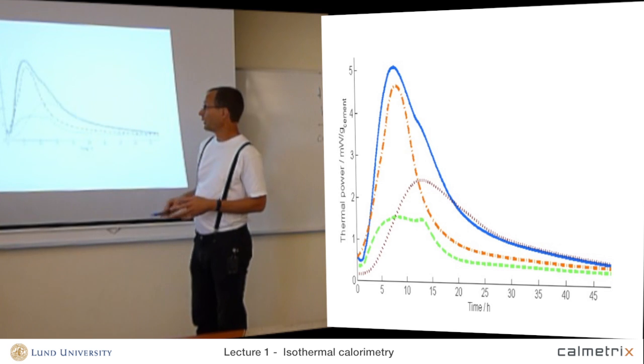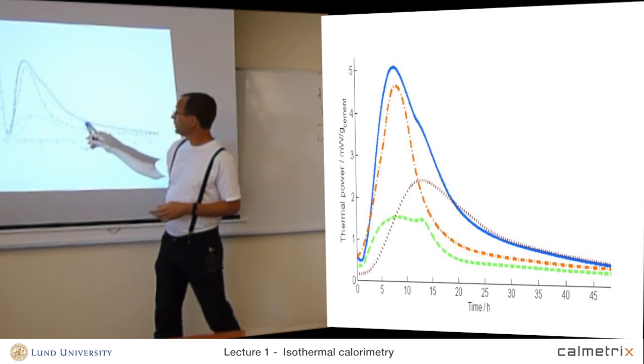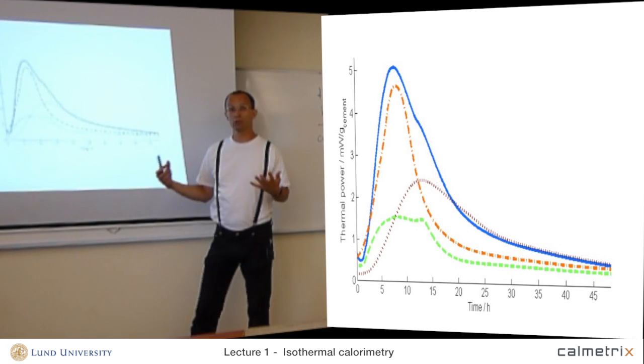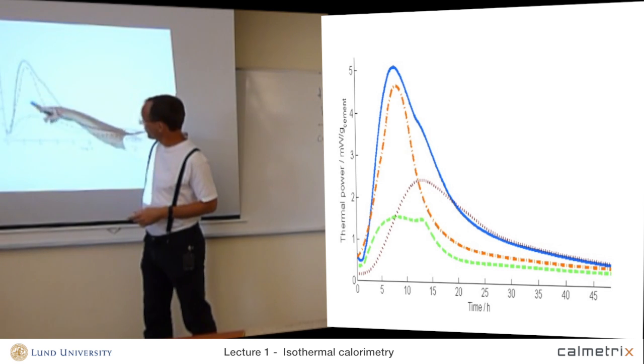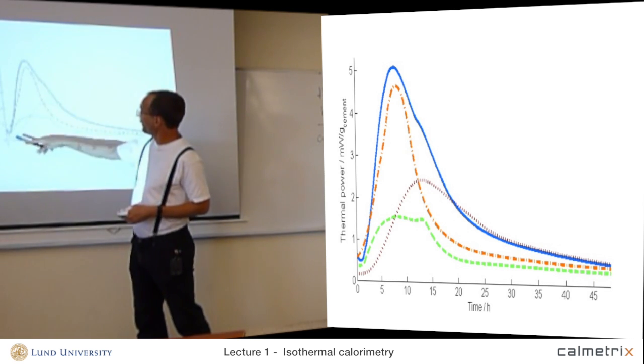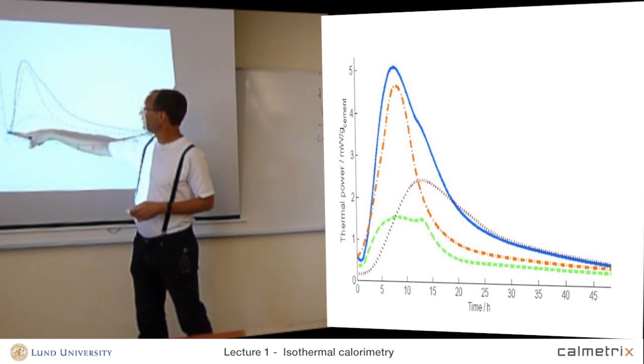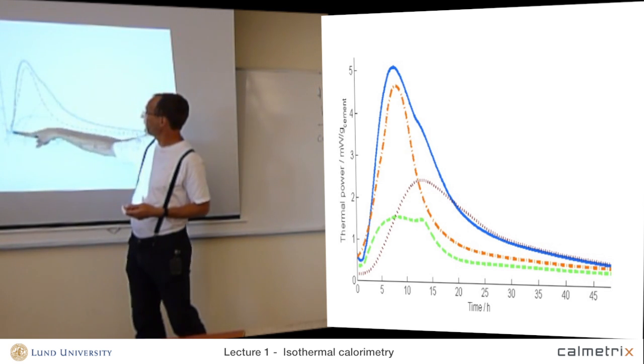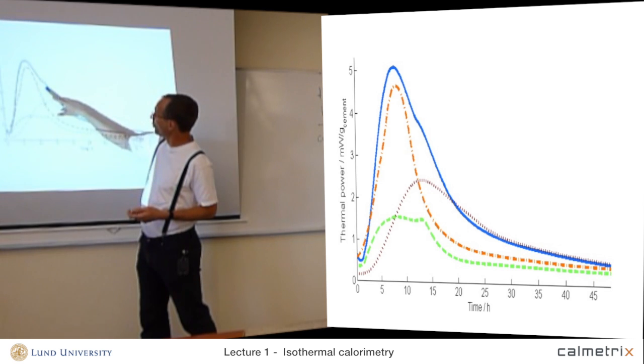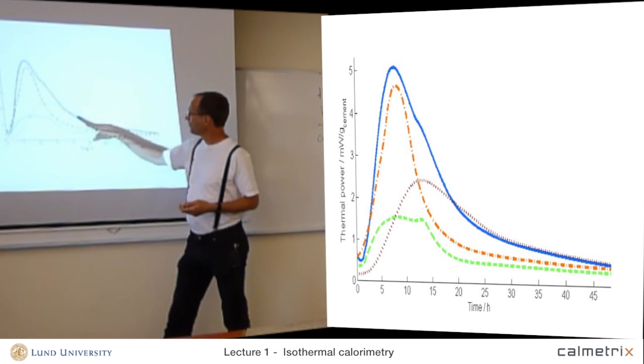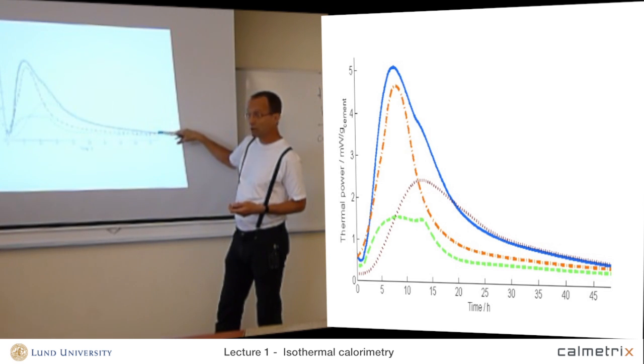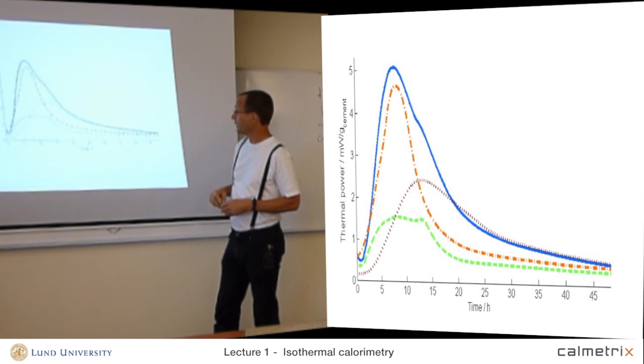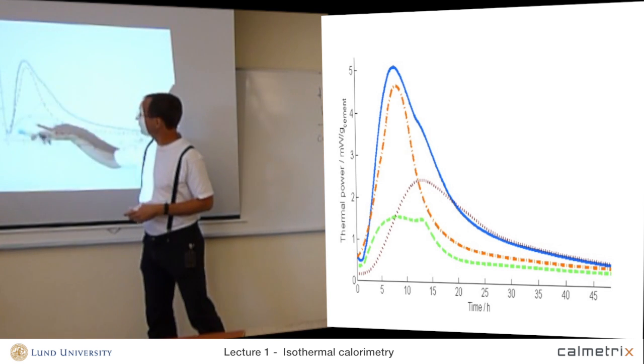As you can see, there are four curves, and they are all different because they are different cements. The blue curve here is the most typical one for ordinary Portland cement. It peaks after about five or ten hours, and it has an initial dormant period where not much takes place, and then there is the main reaction. There is a small second peak or shoulder, very typical, and then the process is actually still taking place. It doesn't go down to zero until after a very long time.